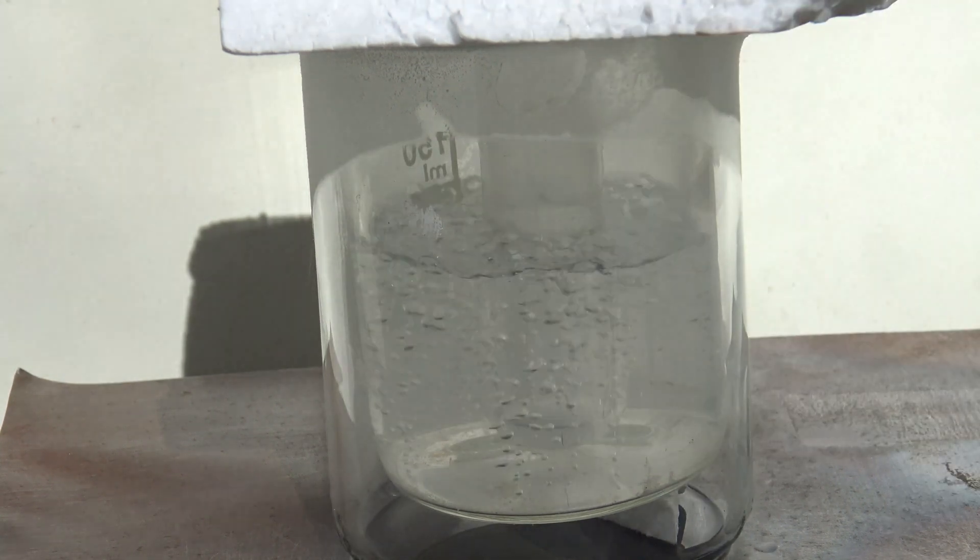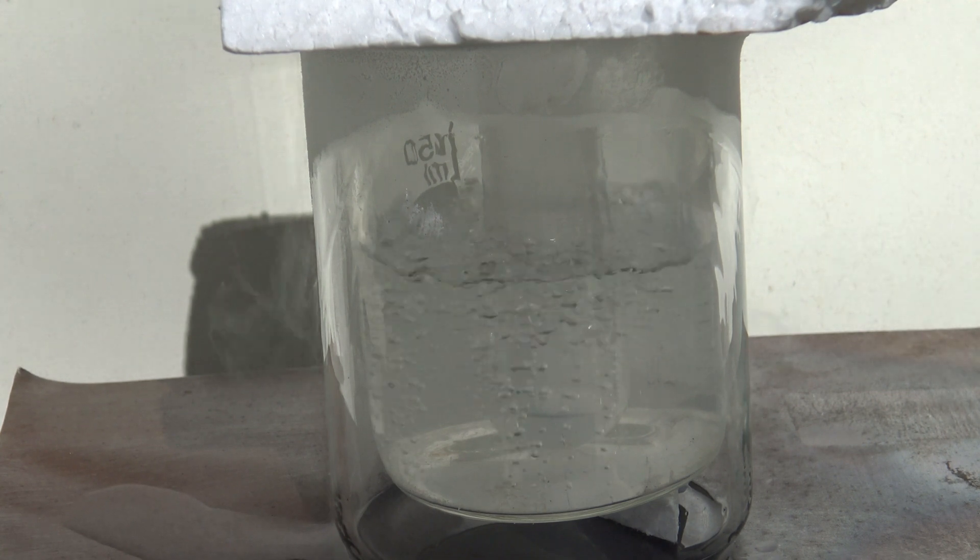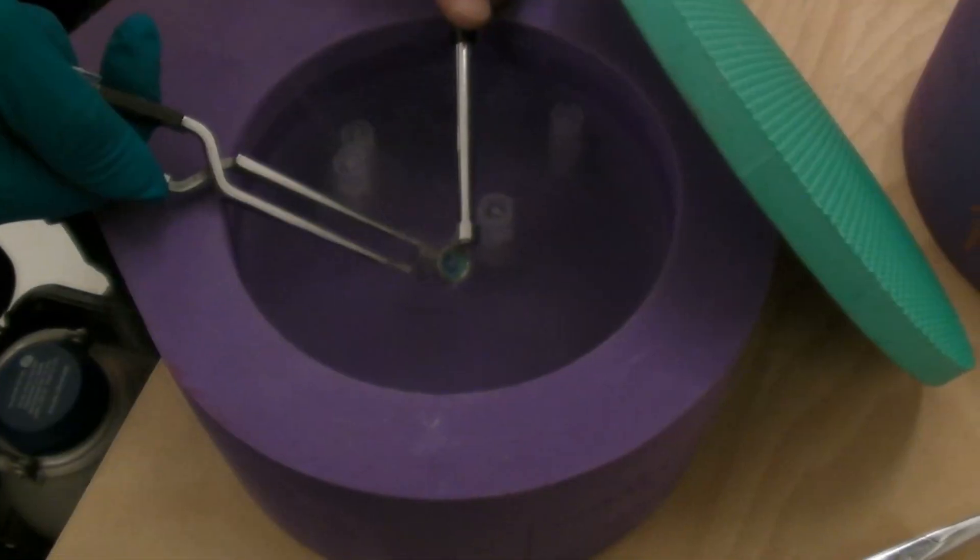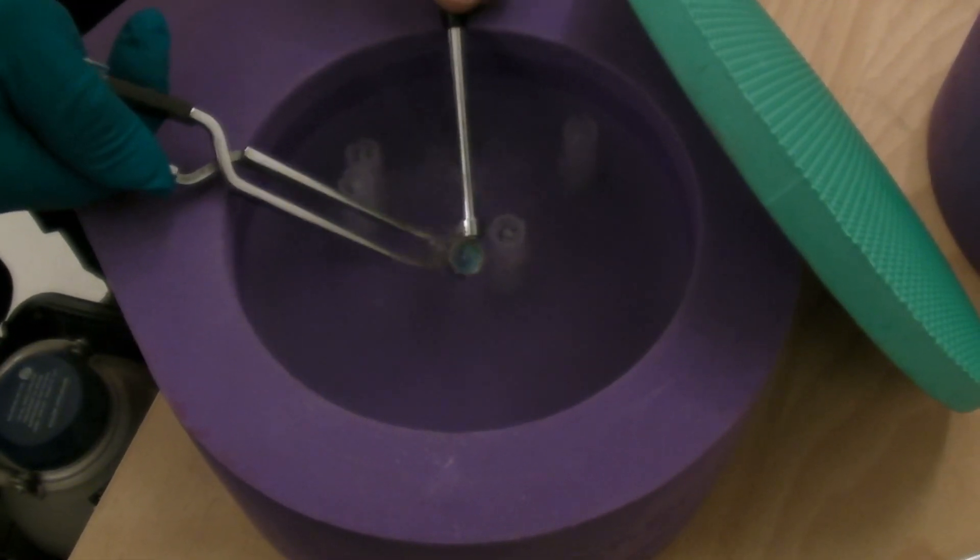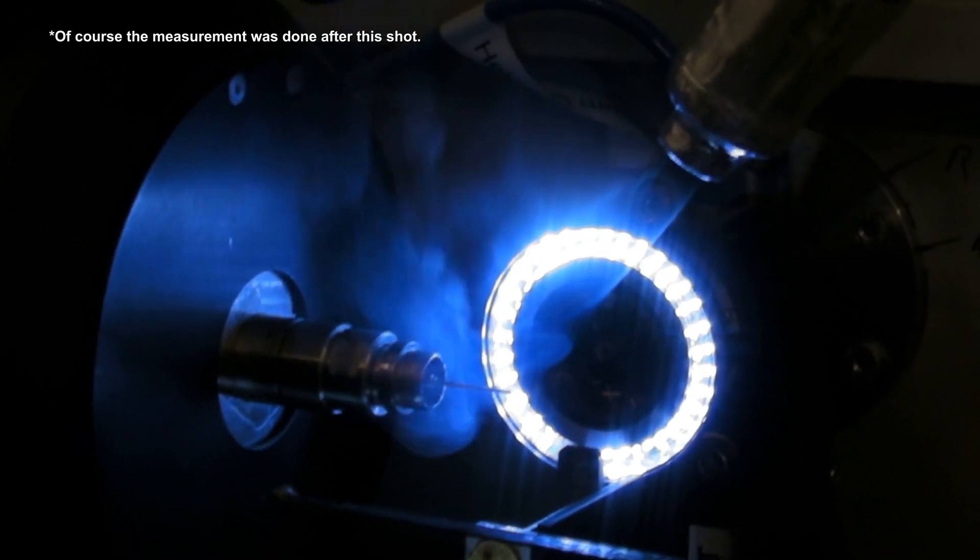In chemistry liquid nitrogen is used in cold traps to keep solvents and by-products from leaving the apparatus or entering a vacuum pump. But it's also used to cool stored samples or cool them down in a measurement like for example in this x-ray diffraction analysis.